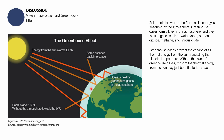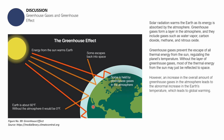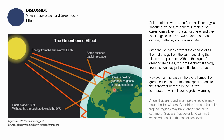It is important to maintain the right thickness of the greenhouse gas layer in our atmosphere — if it's too thin, the planet freezes; if it's too thick, the planet warms. When there is an increase in the overall amount of greenhouse gases in the atmosphere, the increase in our temperature becomes abnormal, and that leads to global warming. Areas in temperate regions will have shorter winters, while tropical regions will have longer and drier summers.